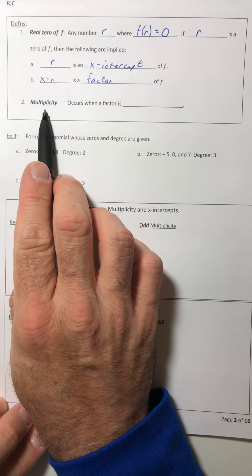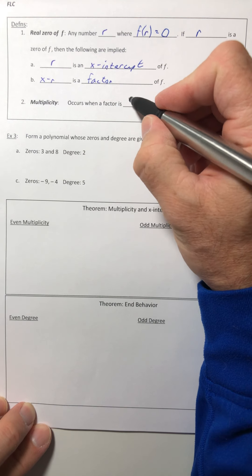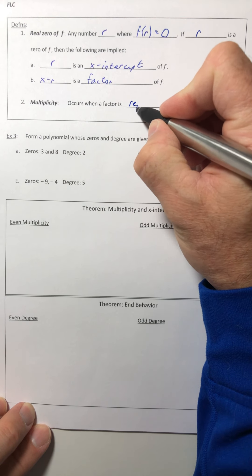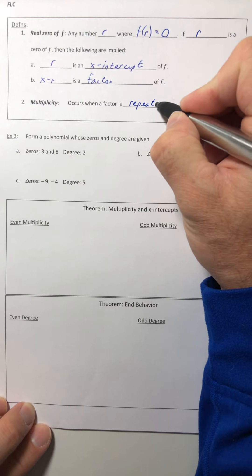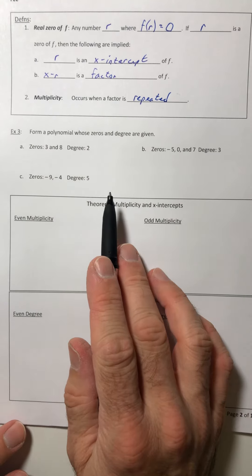Okay, now the second thing to define is the multiplicity. And this occurs just when a factor is repeated. So we'll get into that in just a minute.